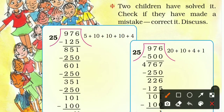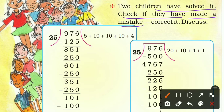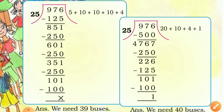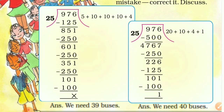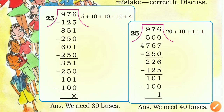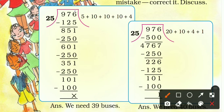Two children have solved it. We have to check their solution, correct any mistakes, and discuss. In the first solution, 976 is the dividend and 25 is the divisor. 976 is divided — 25 times 5 is 125. That's correct. Subtraction: 6 minus 5 is 1, 7 minus 2 is 5, 9 minus 1 is 8. So that step is correct.